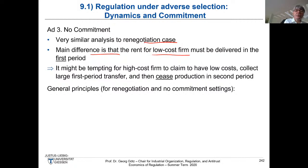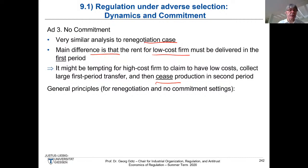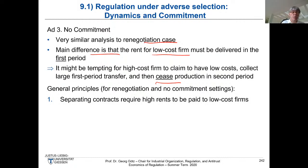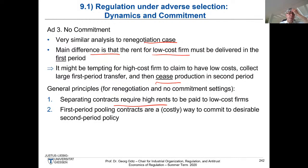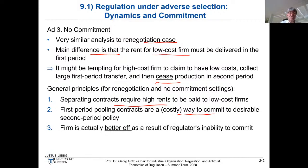With no commitment, if you know you'll be expropriated in period two, you only reveal your type if paid all the rent in period one. This leads to a very high first-period transfer, which can lead the high-cost firm to claim it's a low-cost firm, collect the large first-period transfer, and then not produce in period two — going bankrupt. Laffont calls this the 'take the money and run' strategy. General principle: separating contracts require high rents to be paid to the low-type firm in period one, making pooling very costly. Inability to commit is bad for regulators and good for firms.